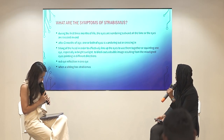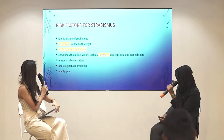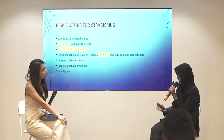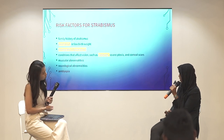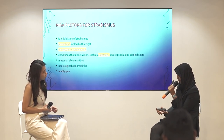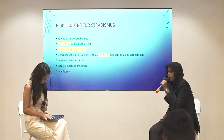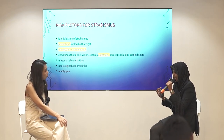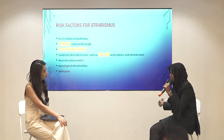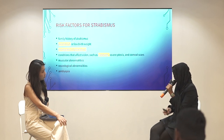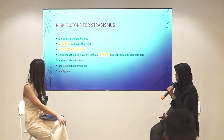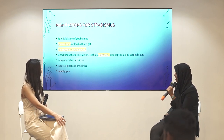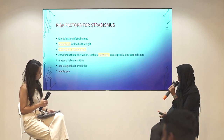Is strabismus related to family history? Yes. The risk factors for strabismus include family history of strabismus, prematurity or low birth weight, retinopathy of prematurity, cataract, muscular abnormalities — since our eyes align with the help of muscles — and neurological abnormalities like brain tumors can cause strabismus as well. Amblyopia is also a risk factor.